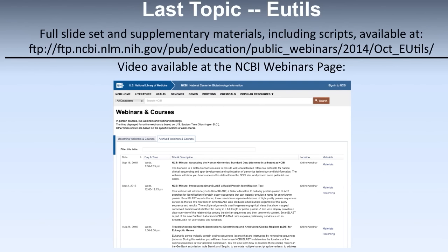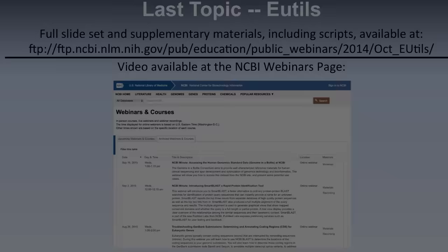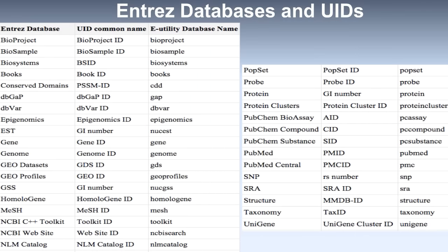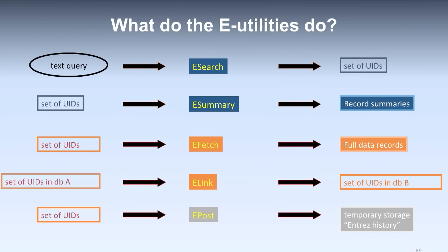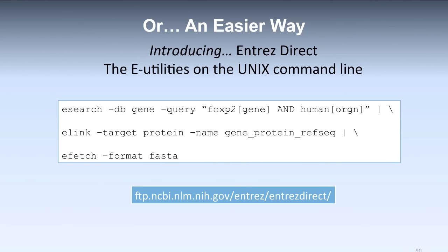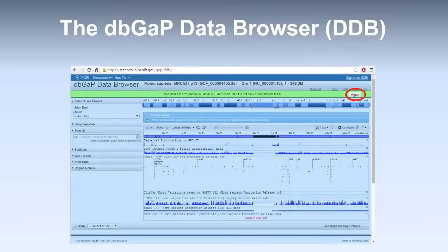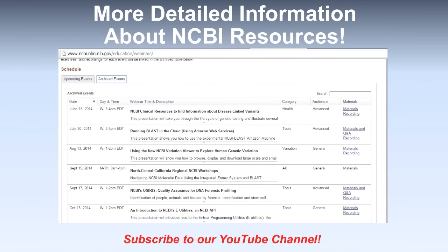The last NCBI topic I'll address today is e-utils. E-utils are a way to cross between NCBI databases, and a specific video is available at the NCBI webinars page, which is easily accessible by Googling NCBI webinars. NCBI e-utils allow you to cross between many NCBI databases. We've also introduced e-direct, which are e-utilities on the Linux command line. We also have a dbGaP data browser that will be out soon for those interested in visual access to dbGaP data. More detailed information about NCBI resources can be found at our webinars page.